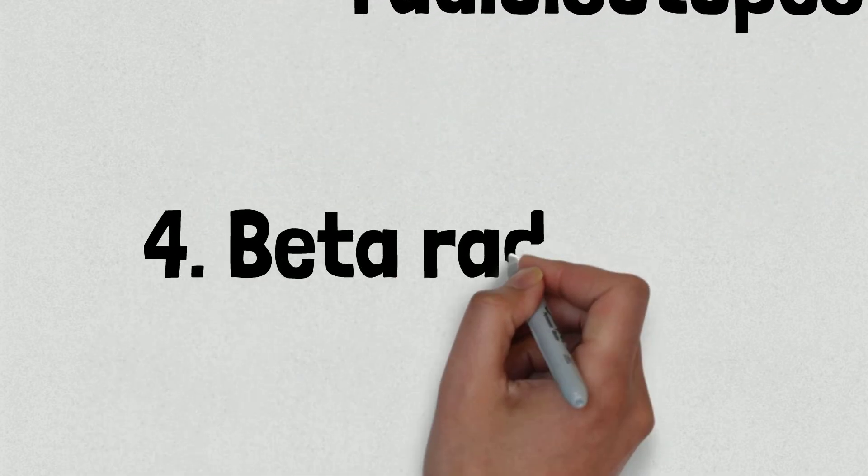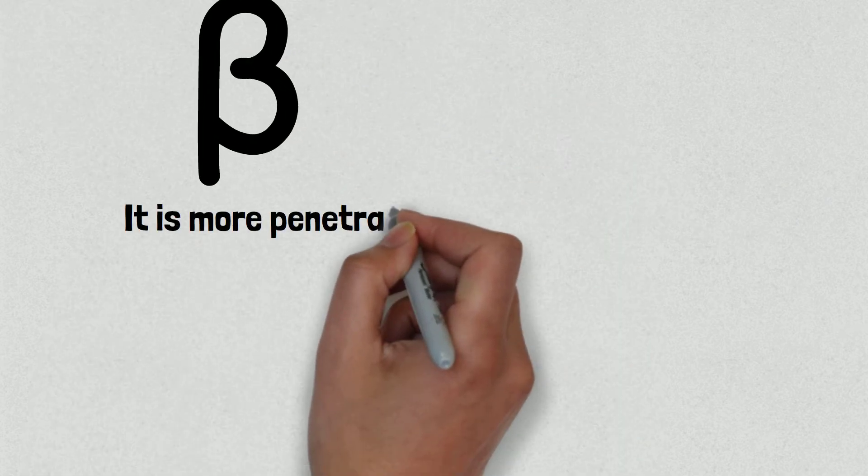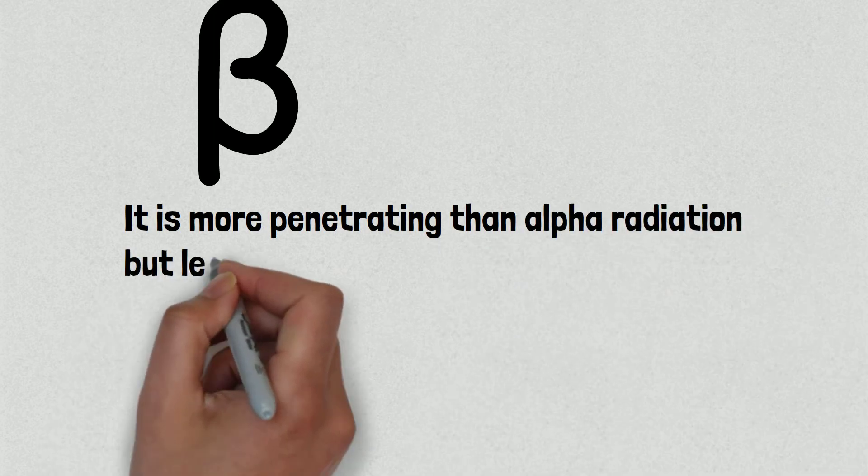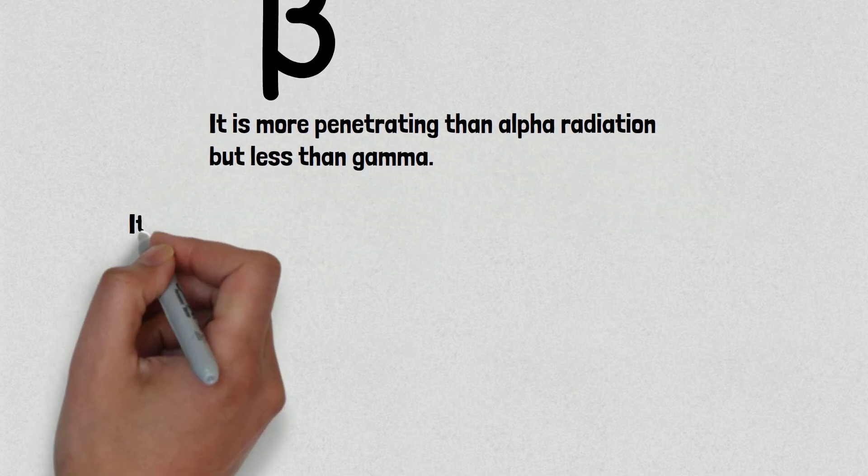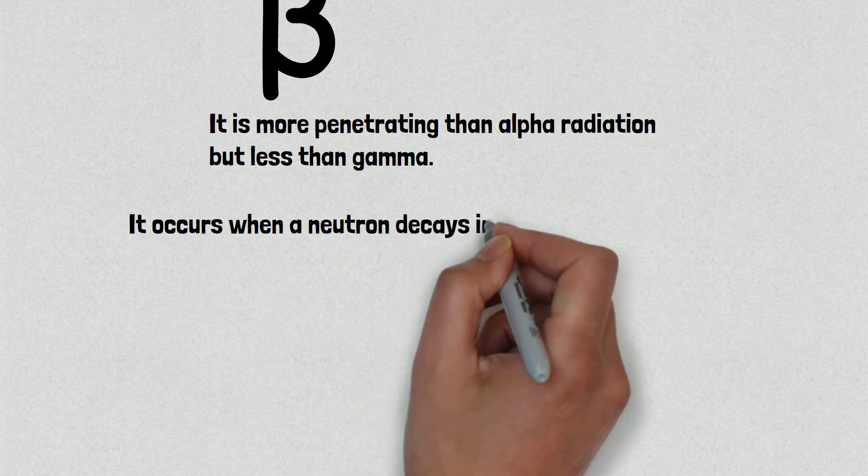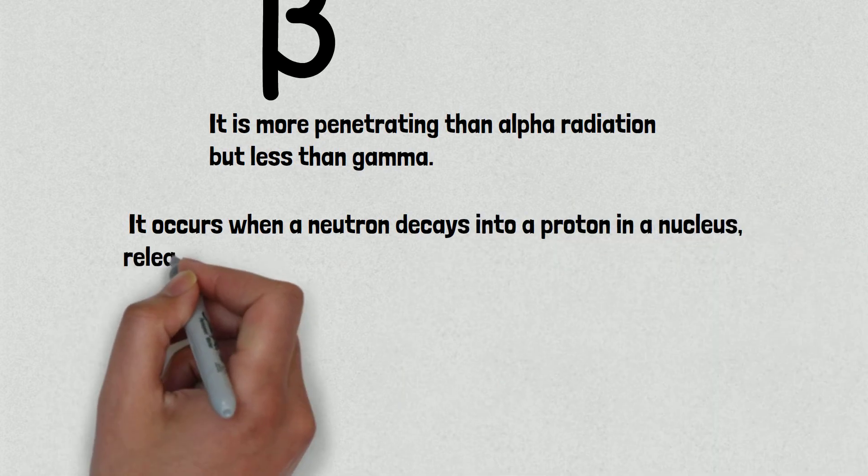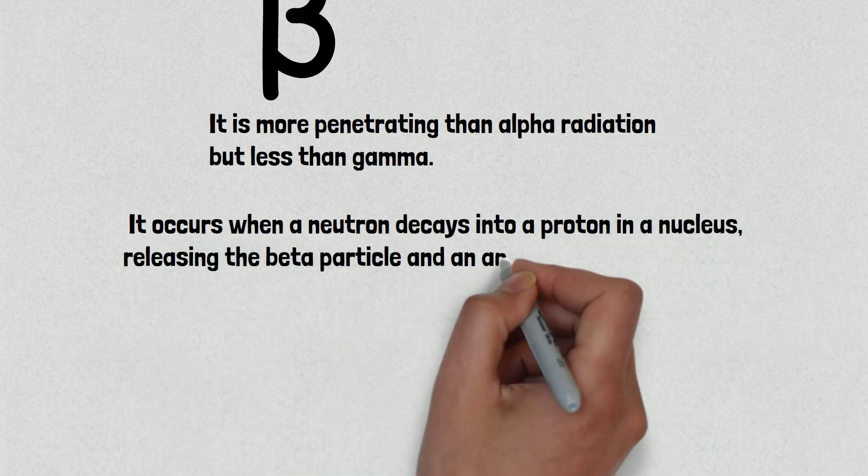Number four is beta radiation. Beta minus radiation consists of an energetic electron. It is more penetrating than alpha radiation but less than gamma. Beta radiation from radioactive decay can be stopped with a few centimeters of plastic or a few millimeters of metal. It occurs when a neutron decays into a proton in a nucleus, releasing the beta particle and an anti-neutrino.